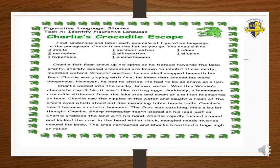The next figurative language you have to find is five alliterations. The first alliteration is 'as he tiptoed' — the letter T is being repeated twice. Second: 'he had no choice' — the letter H is being repeated twice. Third: 'sharp triangular teeth' — the letter T is being repeated twice. Fourth: 'crocodile slithered from the lakeside and swam' — the letter S is being repeated three times.